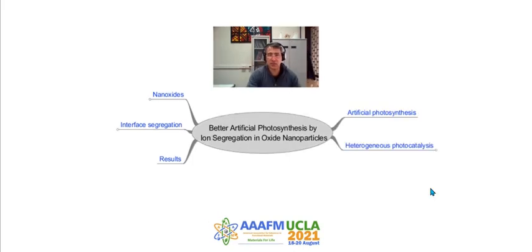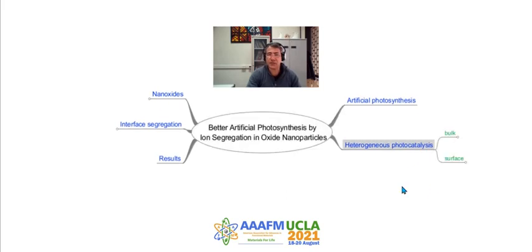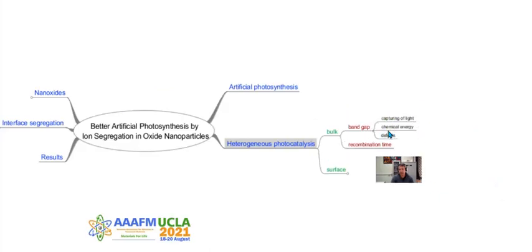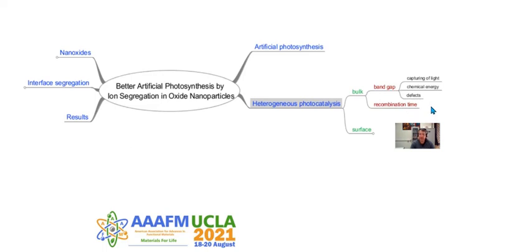Heterogeneous photocatalysis depends on the surface and bulk, and two characteristics of bulk are most important: band gap and the electron-hole recombination time. The band gap depends on the light energy absorbed and determines the chemical energy for all chemical reactions — the valence band and the conduction band. All defects and soluble impurities change the level of defects inside the band gap. The recombination time is a function of the free pathway, and there is a direct relationship between recombination time and the conductivity of grain boundaries in nano-oxides.